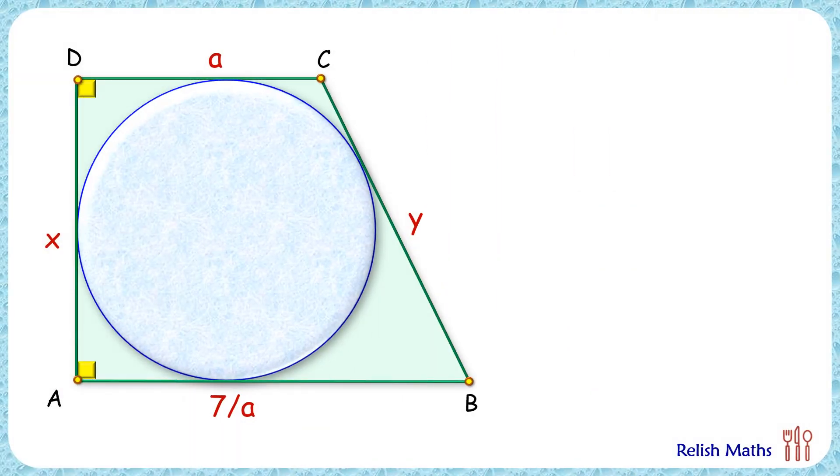Let's check this elegant solution. Here ABCD is a circumscribing quadrilateral, and by theorem, for any circumscribing quadrilateral the sum of opposite sides is equal. Here the opposite sides are x and y, so their sum will be equal to a plus 7/a. Squaring both sides and opening up the bracket will get an equation in this form.